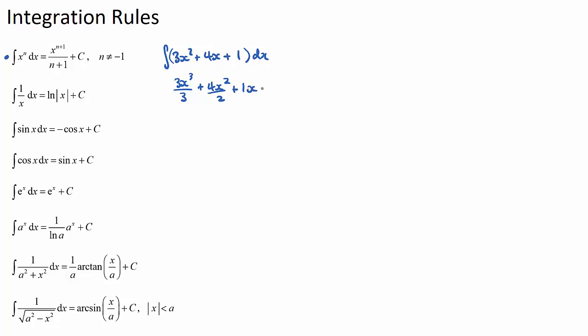If we're integrating a constant, we just attach an x to it. And then we always have our plus c if it's an indefinite integral question where there are no limits on the top and bottom. Now these ones can normally be simplified, so the 3s can cancel out. It'll be x cubed and then 2x squared plus x plus c. So hopefully we are familiar with our basic integration law there.